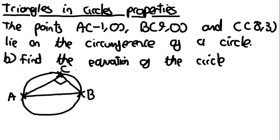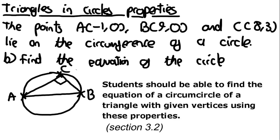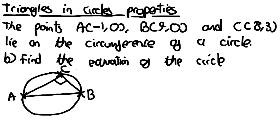The specification says you should be able to find the equation of the circumcircle of a triangle with given vertices. This means finding the equation of a circle when given three points on it. There are two different circumstances for this, and you need to approach each differently. The first circumstance is when one of the sides connecting the points is the diameter, which is the case in the example we just went through.